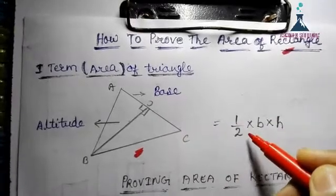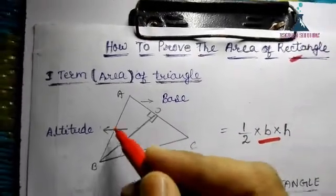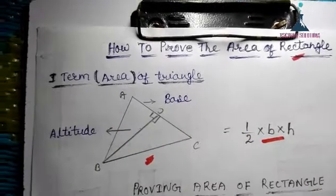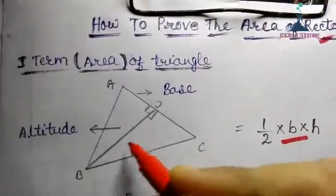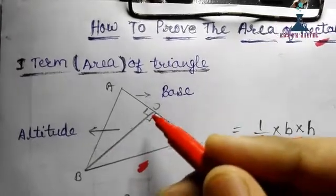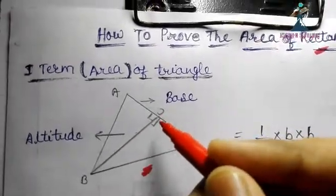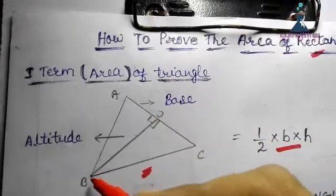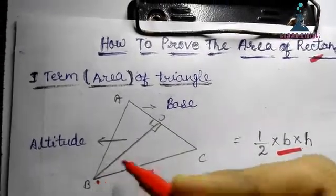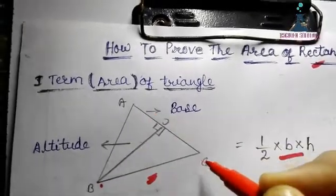The area of a triangle is half into base into height. Now, what is altitude? Altitude is the line segment which is perpendicular to one side and joined to the opposite vertex. As you can see here, B is the opposite vertex and it is perpendicular to side AC.